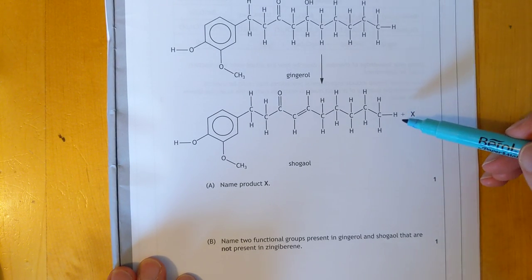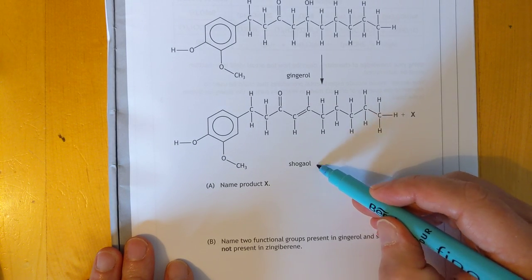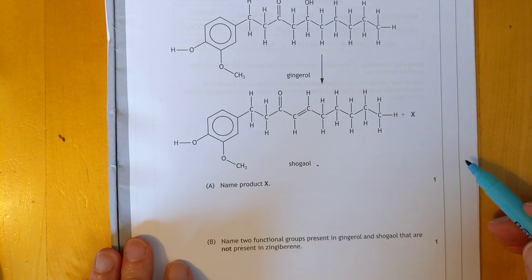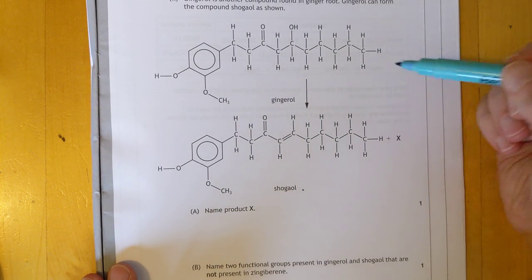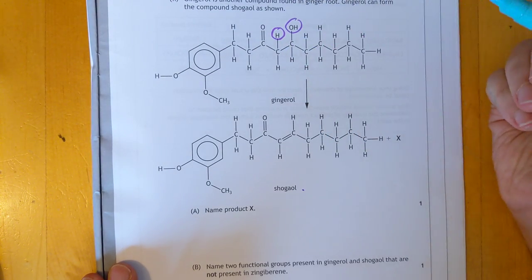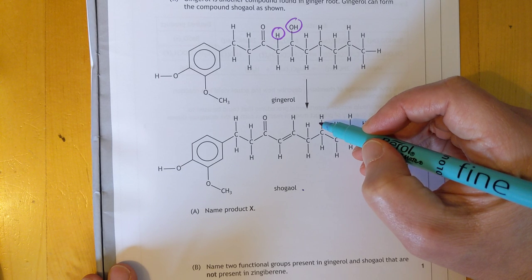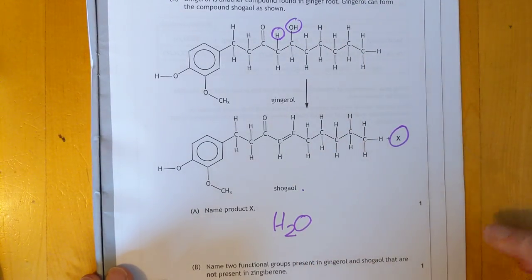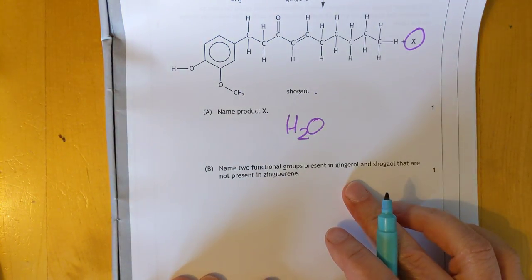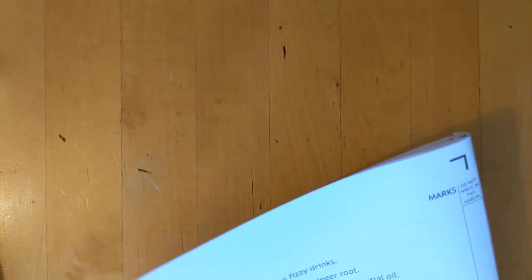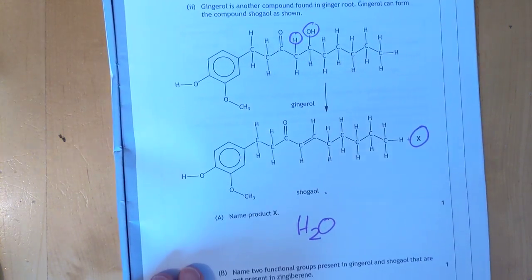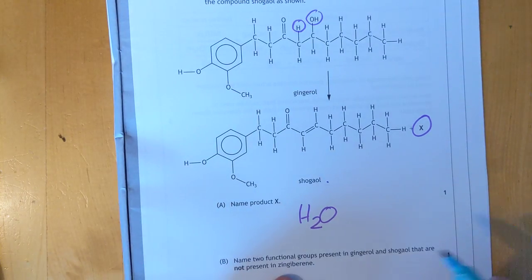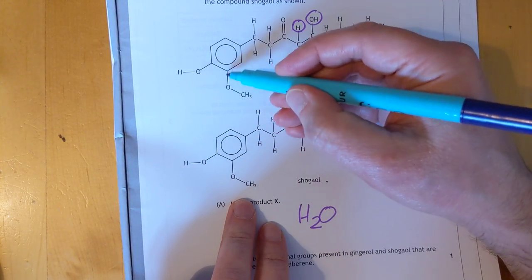Gingerol. That's another compound from the ginger root. What's going on here? Gingerol can be changed into that. Sounds like a character from the Marvel Universe. Name the product X. What's changed? We've lost the OH and the H. I see what they've done. This is actually the opposite of addition, which is quite sneaky because that's only a concept that we really throw in advanced higher, so that's sort of why it's problem solving. H and OH, you've lost water. Of course you have. The water's been peeled off. Name two functional groups present in gingerol and shogaol that are not present in zingiberene that's boring. It's just carbons and double bonds. This has got hydroxyl and carbonyl. Hydroxyl and carbonyl. That'll be your two answers.